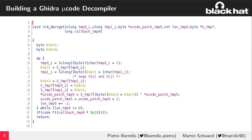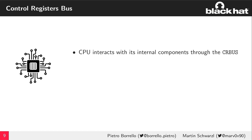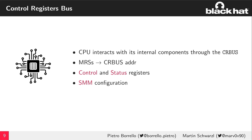Going through the disassembly, there's frequent interaction with a component called the CR bus — the control register bus — which is the bus the CPU uses to interact with its internal components. MSRs are mapped into CR bus addresses, as are control/status registers, SMM configuration, and interestingly, the L-TAP is also mapped into the CR bus.